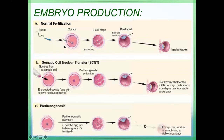For normal fertilization, we have the male producing sperm and the female producing the oocyte. After fertilization it becomes the zygote, which develops into an embryo, then morula and blastocyst. After the blastocyst hatches and undergoes implantation, we get the baby.